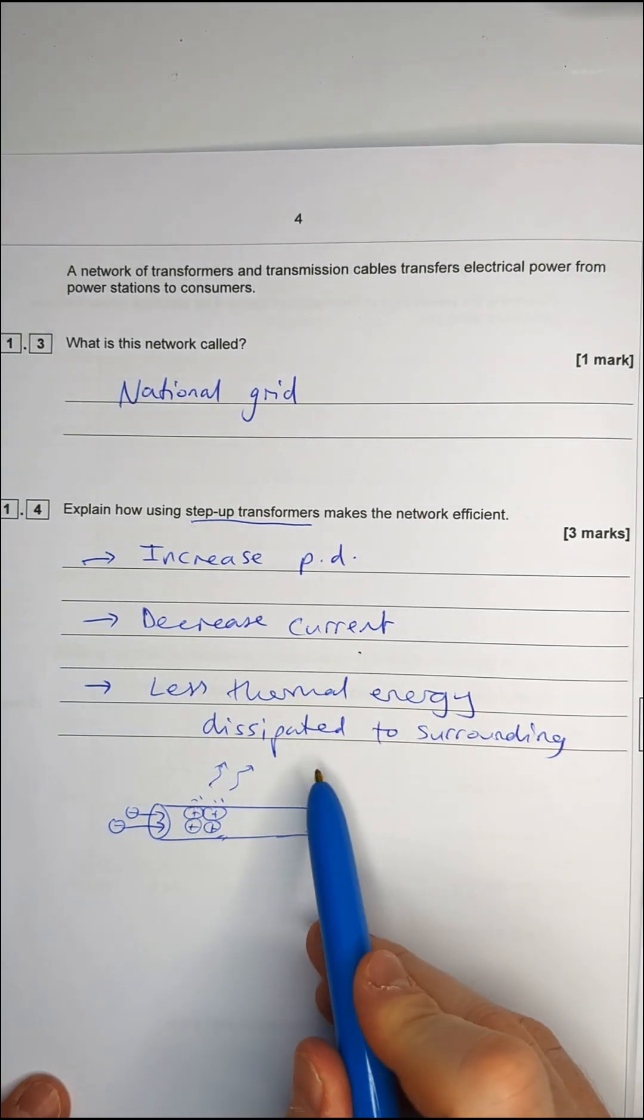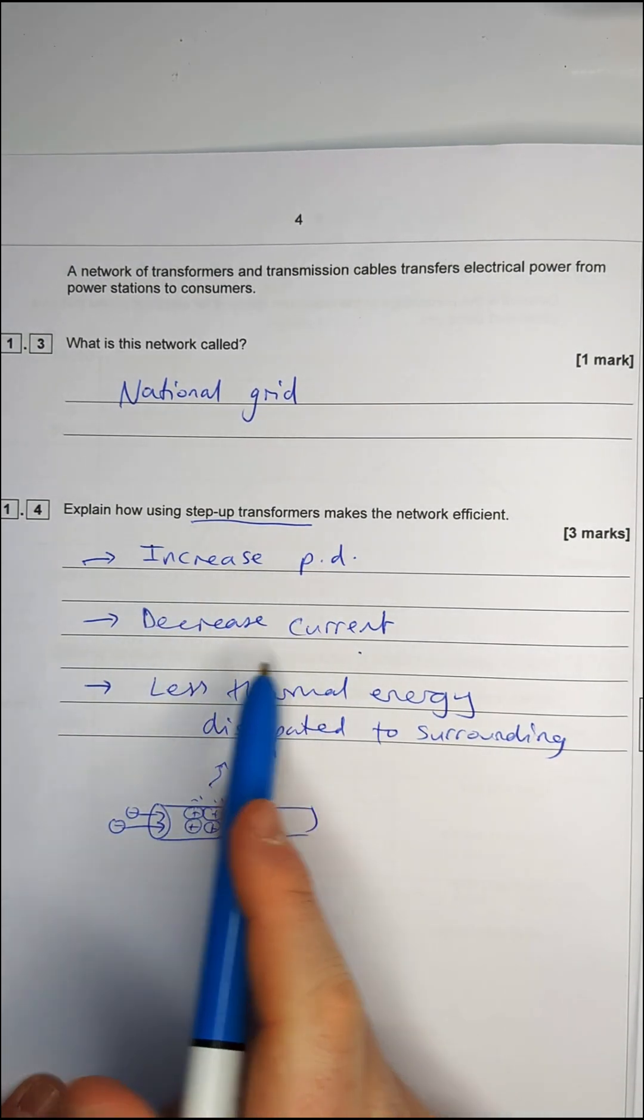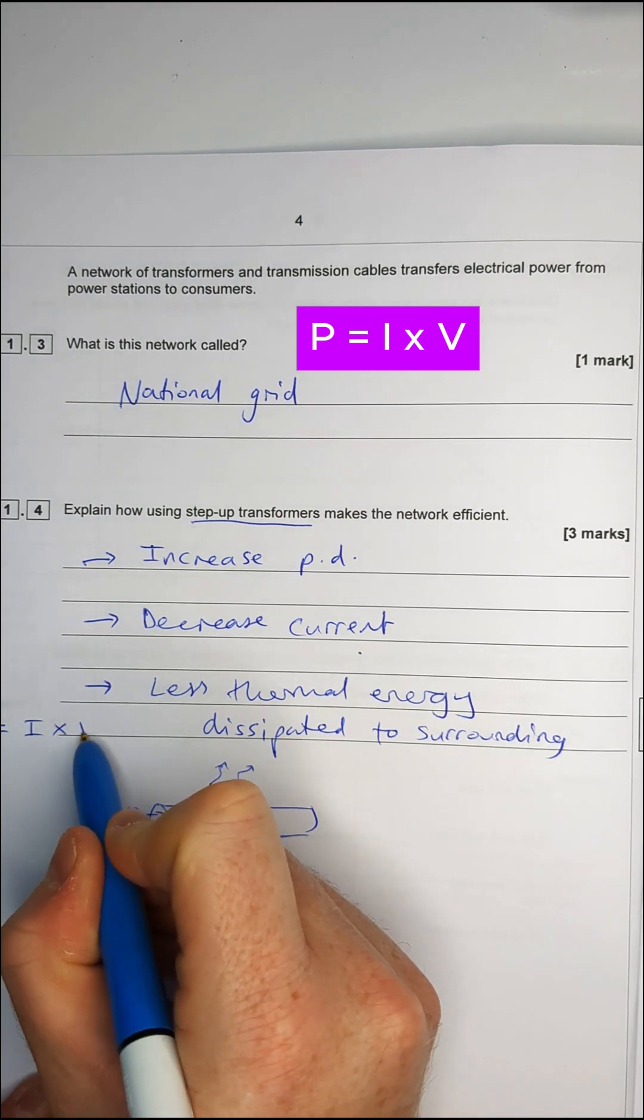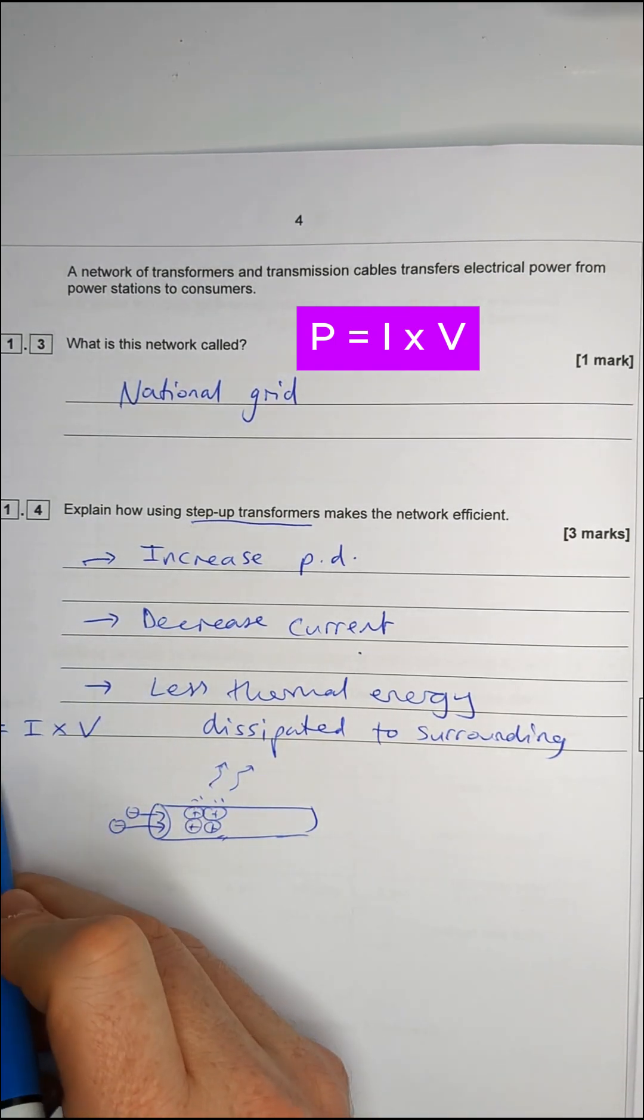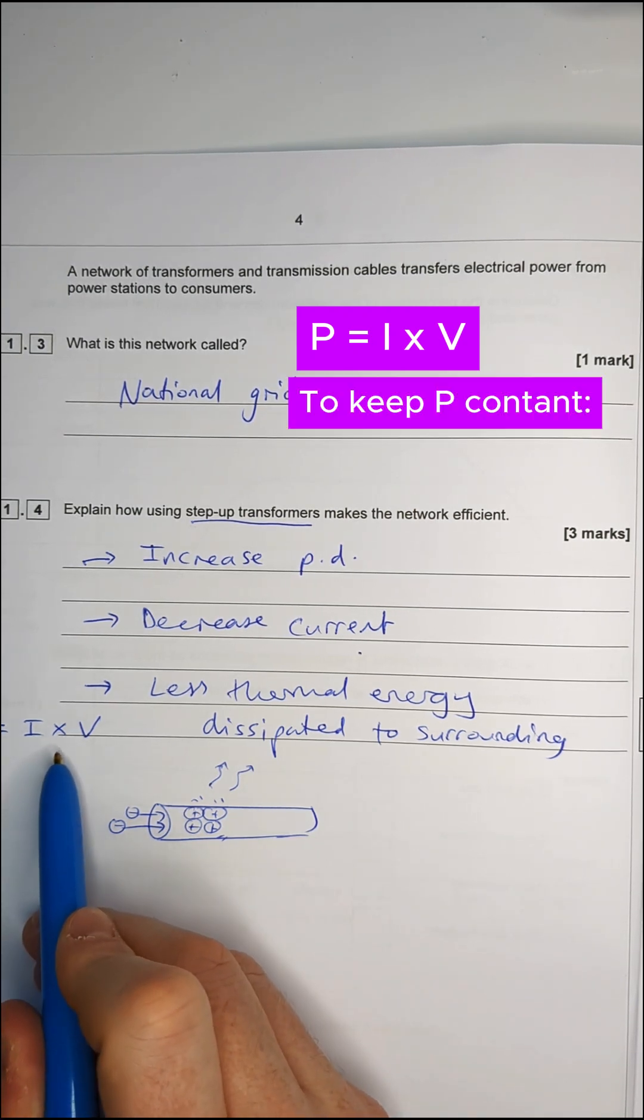So we want to reduce the current to stop that happening. Now, if you ever wondered why increasing potential difference decreases the current, you can use an equation to help you. Power equals current times potential difference. Power has to be constant. We can't have wasted power, just like we can't have wasted energy. 100% in, 100% out is an assumption we make here.